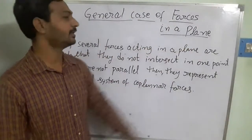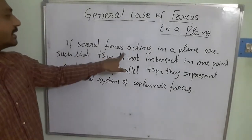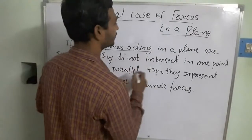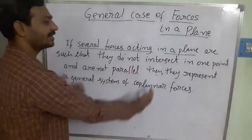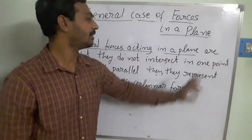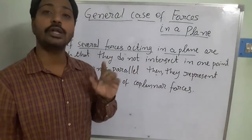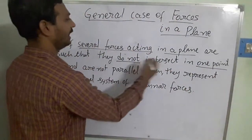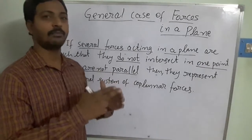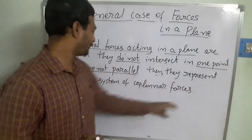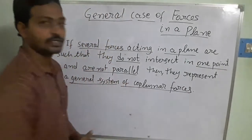The definition of the general case of forces: if several forces acting in a plane are such that they do not intersect at one common point and are not parallel to each other — they may intersect at individual points but not at a single common point — then they represent the general system of coplanar forces.